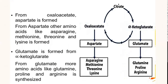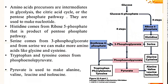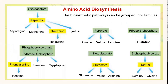Glutamate, which is derived from alpha-ketoglutarate, in turn acts as a precursor molecule in the synthesis of glutamine, proline, and arginine. So based on the precursor molecules from which the different amino acids are being synthesized, the amino acid biosynthetic pathways can be grouped into families. There are six major groups based on the precursor molecules that go into the formation of the different amino acids.